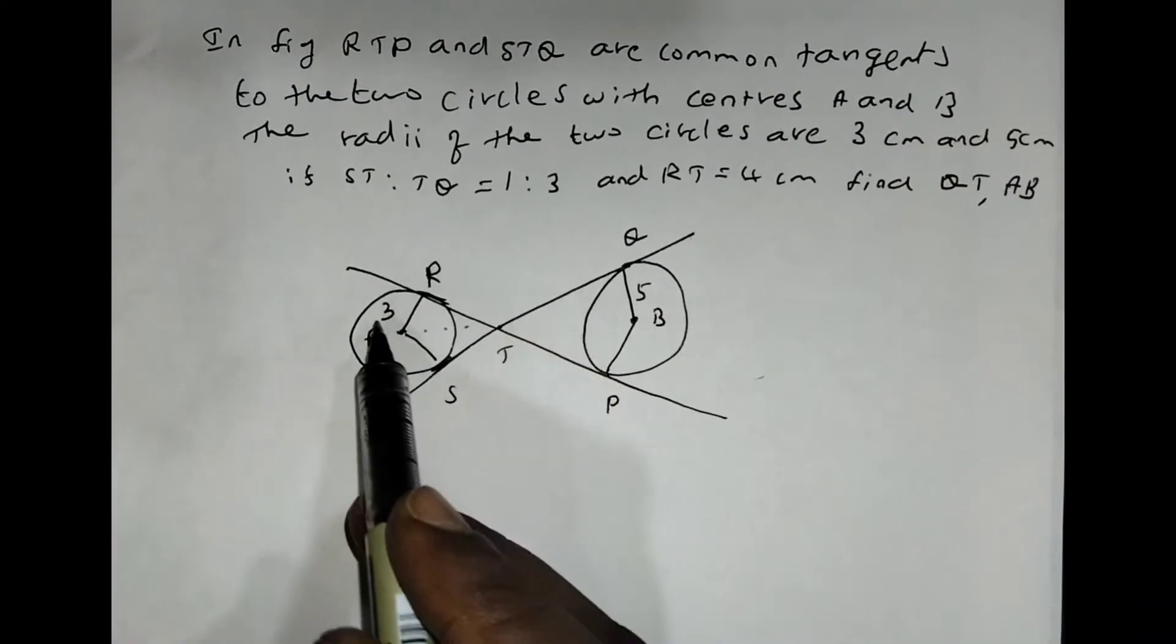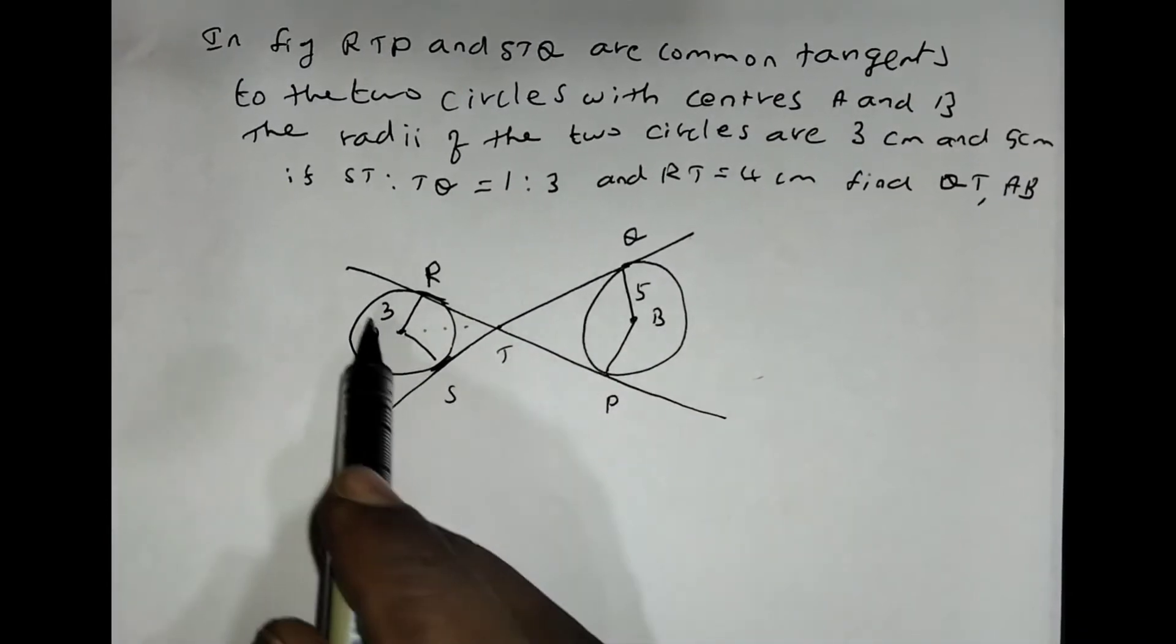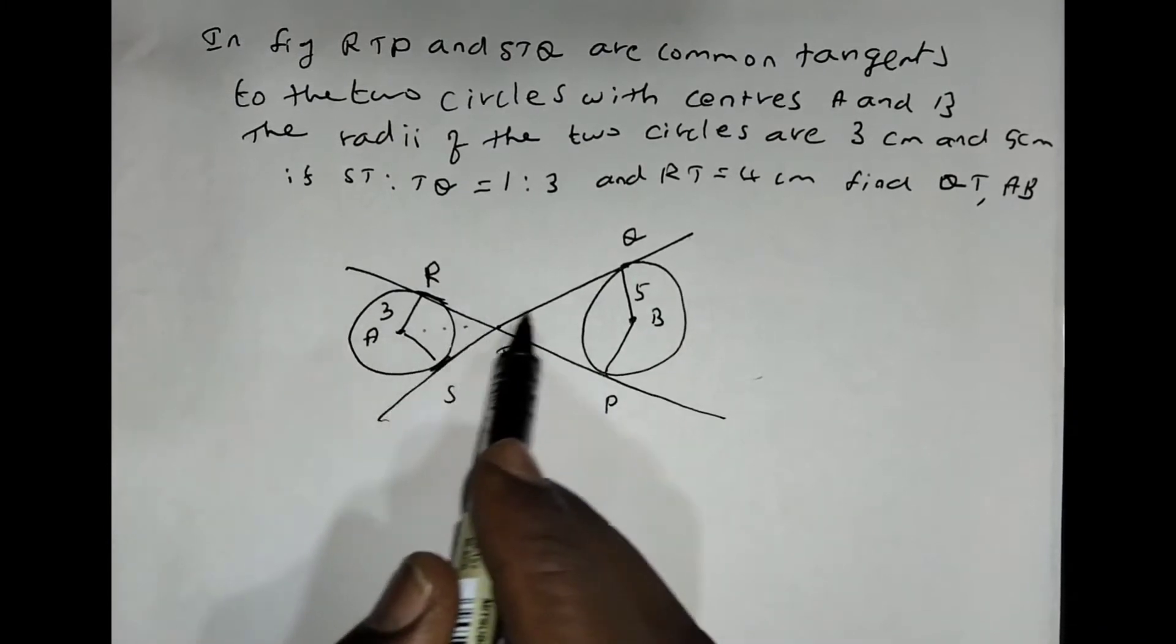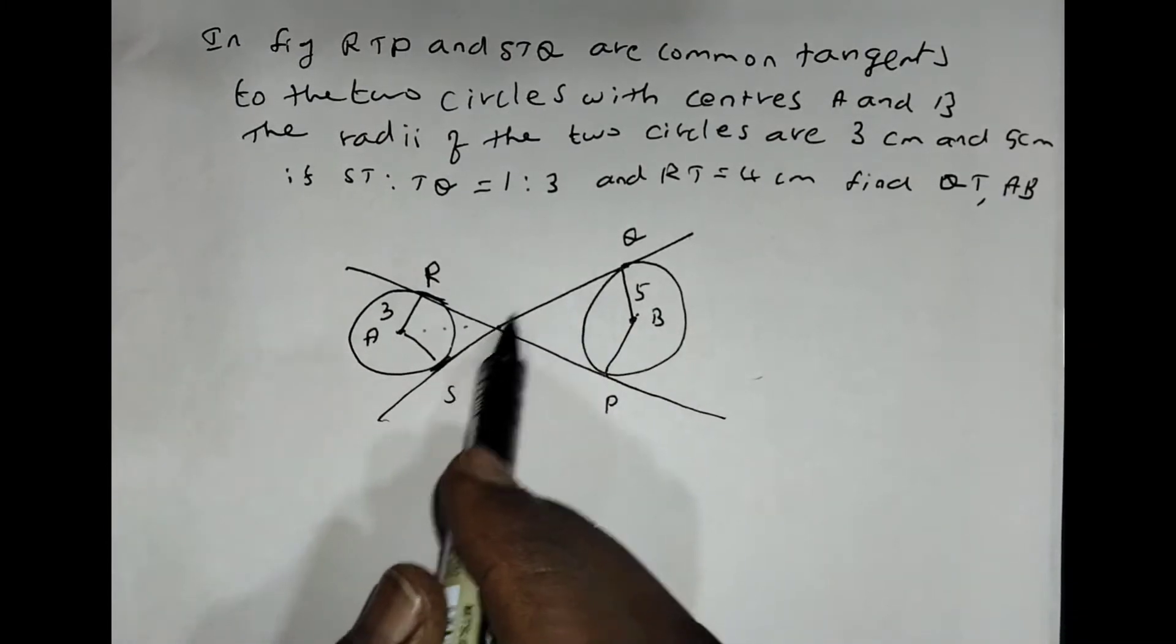They are given two circles with radius 3cm and 5cm. The circles have two common tangents that intersect at point T. They are asked to find the length of AB and the length of DQ.